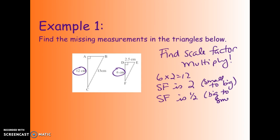So if I'm going to try to figure out some missing measurements, I'm just going to be using these scale factors. For instance, I don't know what this side length AB is, so I'm going to take its corresponding side, which is 2.5 centimeters DE, and I know that the scale factor from the small to big is 2, so I'm going to take 2.5 and multiply it by 2.